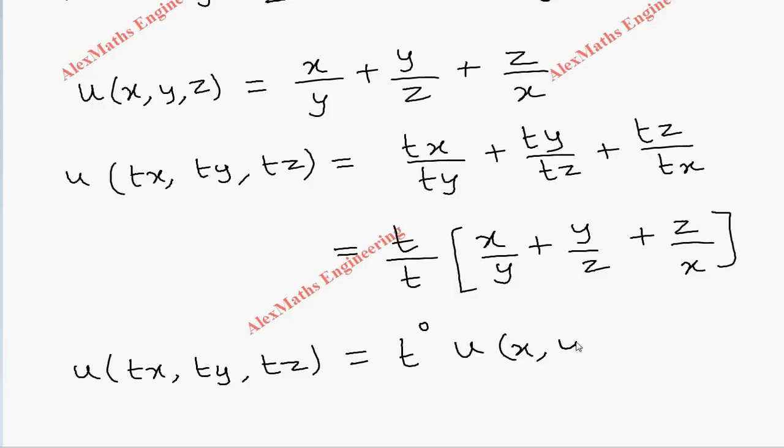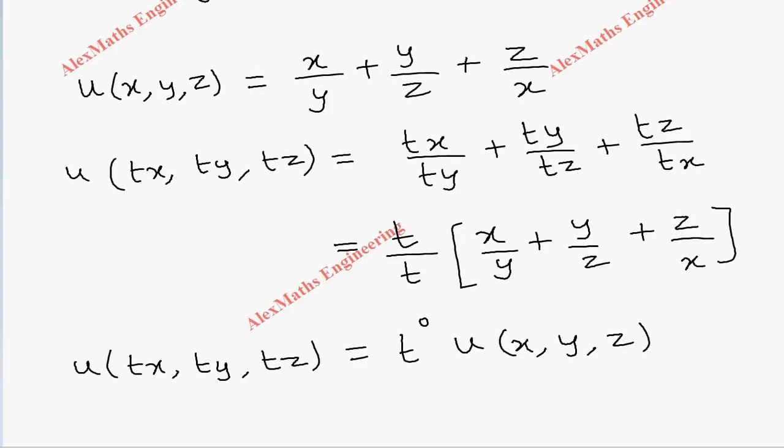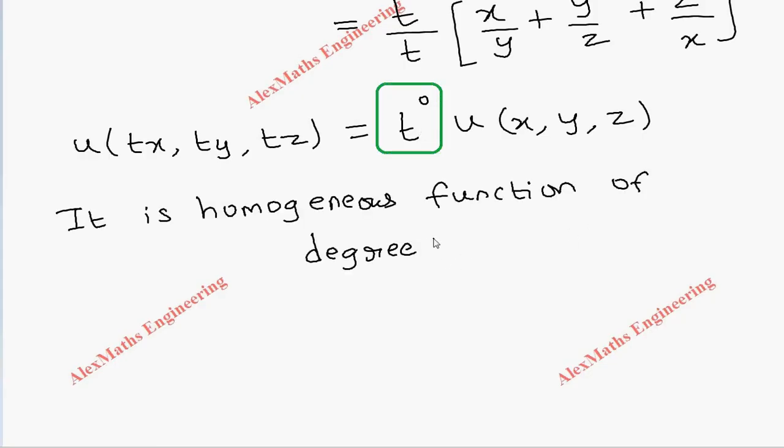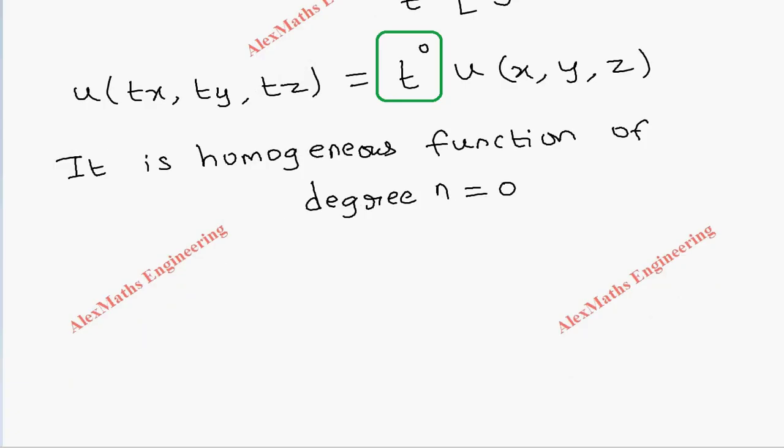From this it is very clear that it is a homogeneous function of degree 0, degree n equal to 0. Now by Euler's theorem we have x into del u by del x plus y